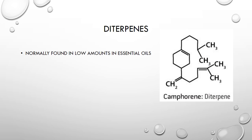The last terpene found in essential oils is diterpenes. They are found in a low amount in essential oils, and the picture here is an example of a diterpene found in an essential oil.